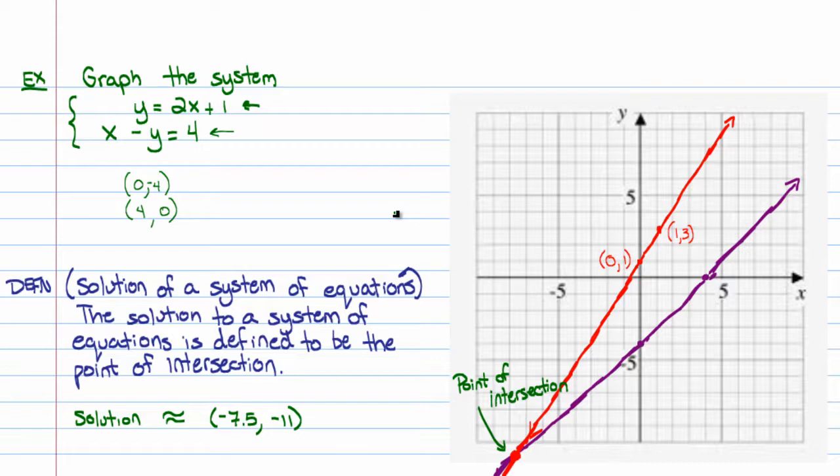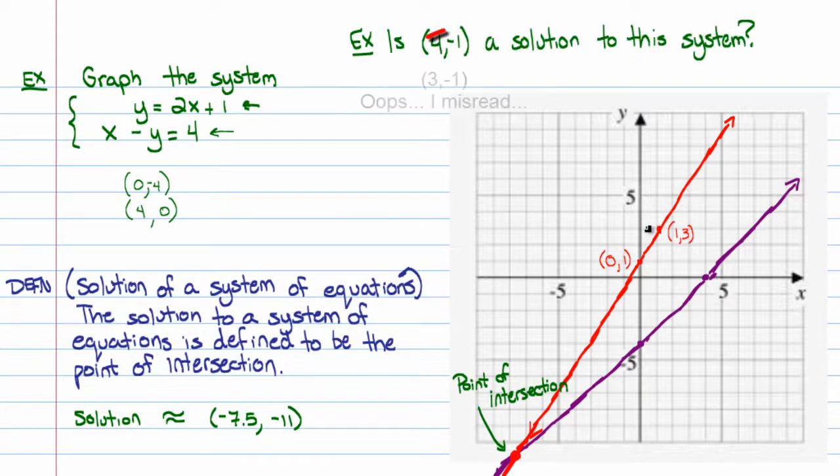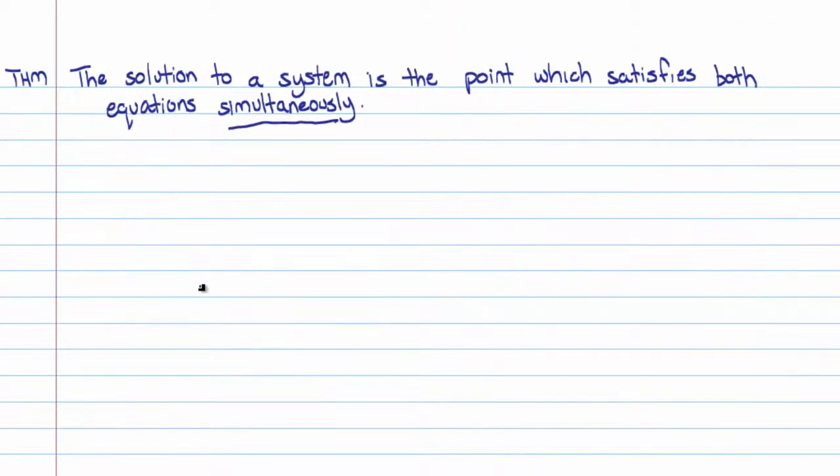Now, often, people ask little sub-questions like, is 4 comma negative 1 a solution to this system? Well, if you go over 4 and down 1, you land right here. And while you are on one of the lines, you're not on an intersection of the lines. In other words, that point right there does not exist on both lines at the same time. So, the answer to that is no. It only solves one of the equations, not both.